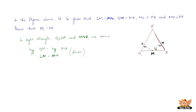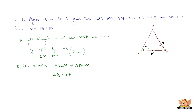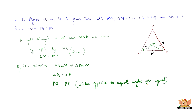In right triangle QLM and RNM, hypotenuse QM equals hypotenuse MR, which is given. Also LM equals MN, which is given. And angle L equals angle N, both being right angles. So by the RHS criterion, triangle QLM is congruent to triangle RNM. Therefore, angle Q equals angle R by CPCT. Since angle Q equals angle R, the sides opposite to these equal angles are also equal, hence PQ equals PR. Hence proved.